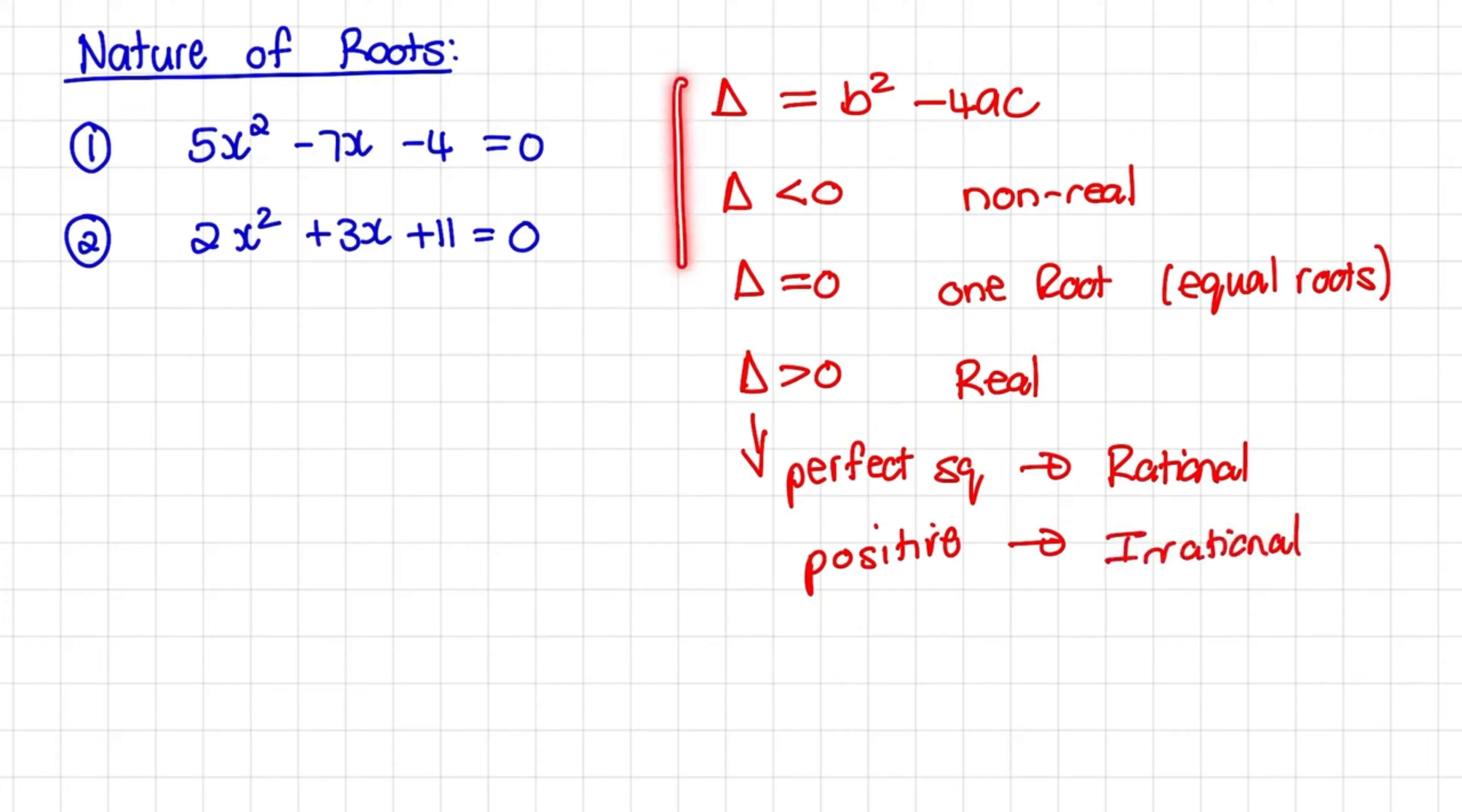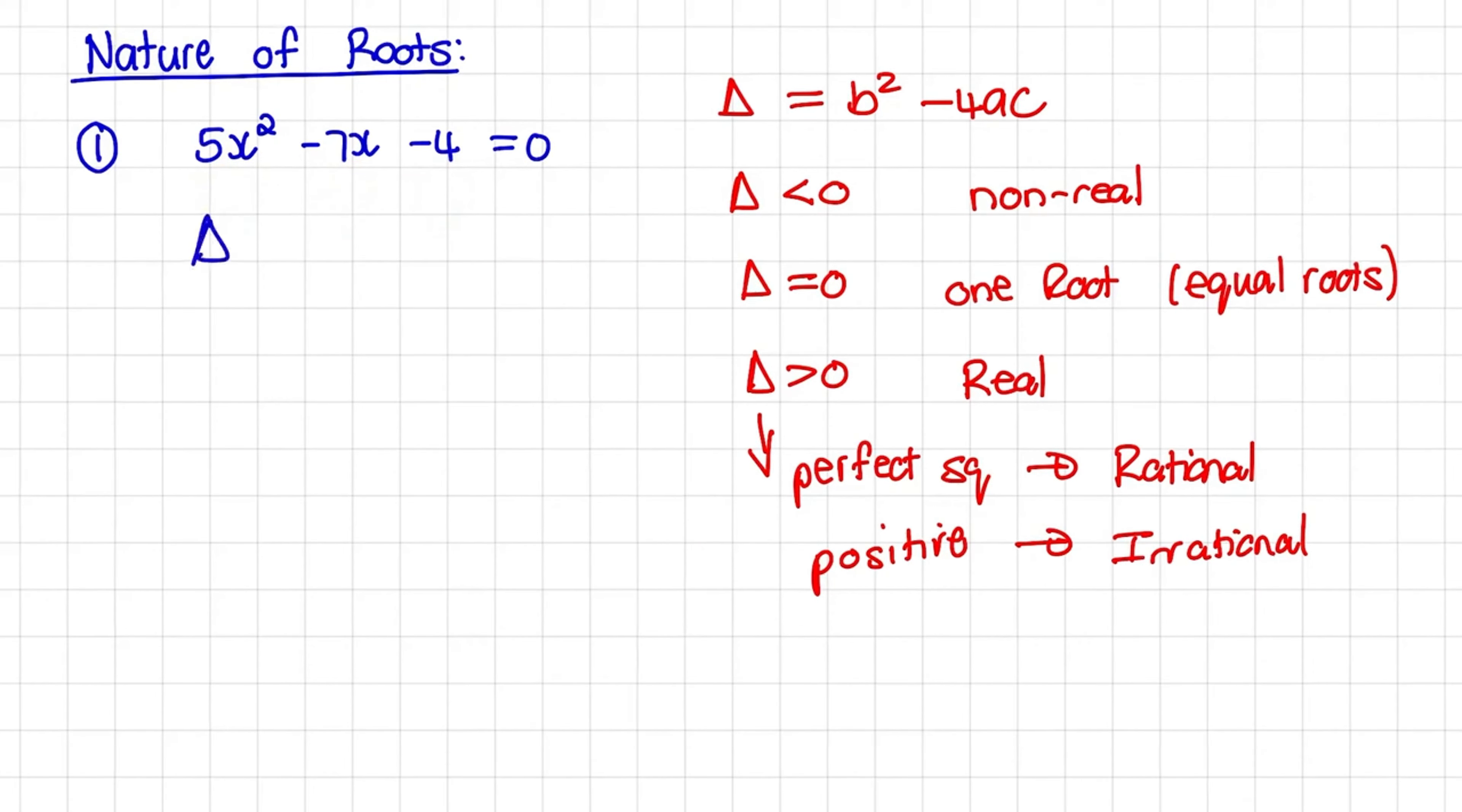So let us use this guide to discuss the nature of roots for these two equations. First, we have 5x squared minus 7x minus 4. We can identify our discriminant as b squared minus 4ac, where